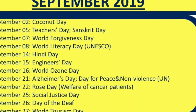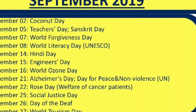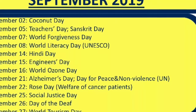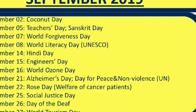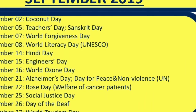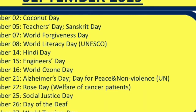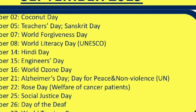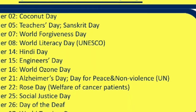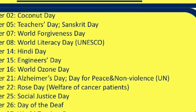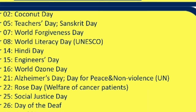21st September: Day of Peace and Non-Violence by UN. 22nd September: Rose Day — Welfare of Cancer Patients. 25th September: Social Justice Day. 26th September: Day of the Deaf. 27th September: World Tourism Day. Those are all September 2019 days.